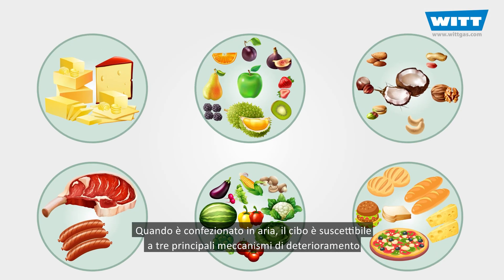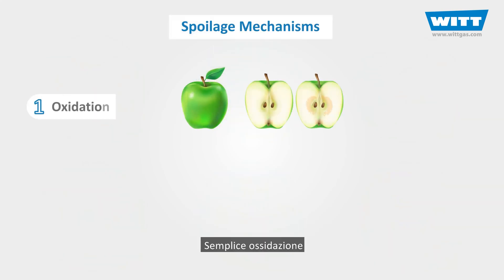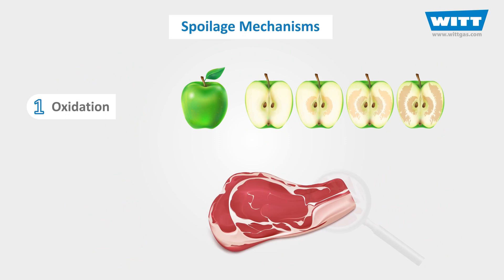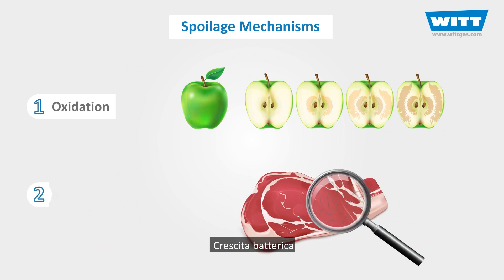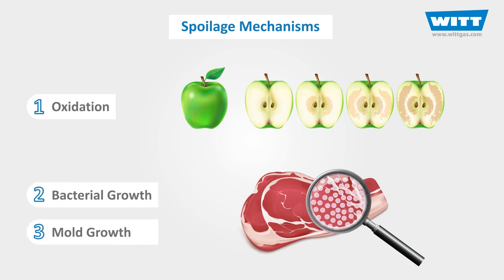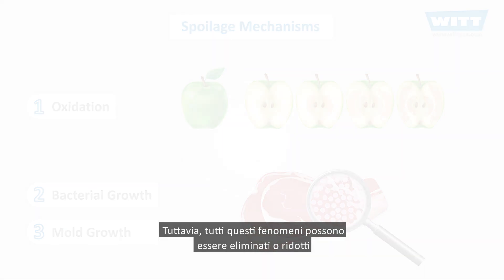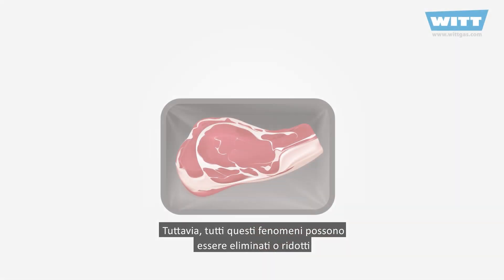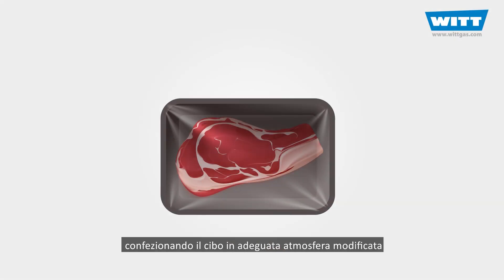When packed in air, food is susceptible to three main spoilage mechanisms: simple oxidation, bacterial growth, and mould growth. However, all of these can be suppressed or reduced by packaging the food in the appropriate modified atmosphere.